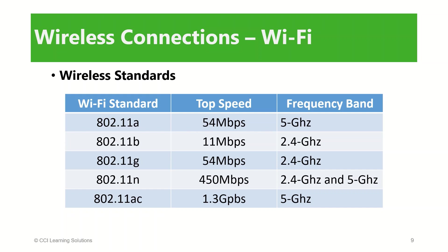Wireless equipment that is compatible with multiple Wi-Fi standards is often identified by multiple suffixes. For example, you might see a laptop that includes the specification 802.11b/g/n wireless. This means that the built-in Wi-Fi adapter will work with 802.11b, 802.11g, and 802.11n. As is the case with advertised broadband speeds, the top speeds are theoretically maximum rates — the throughput rates you experience will be lower than the maximum rates.